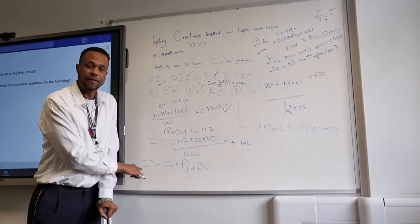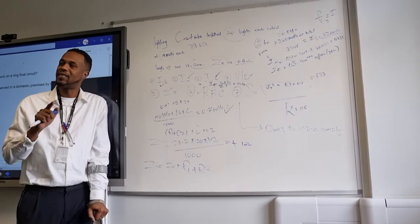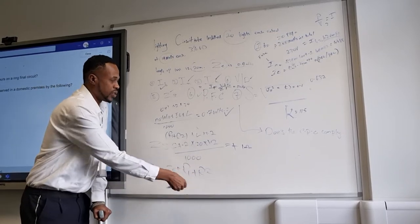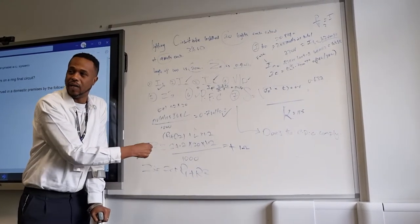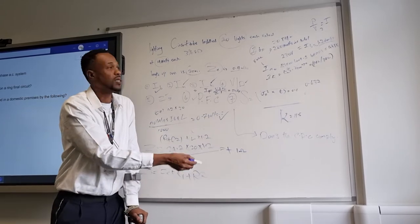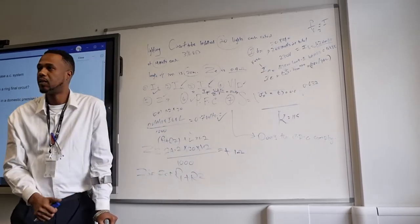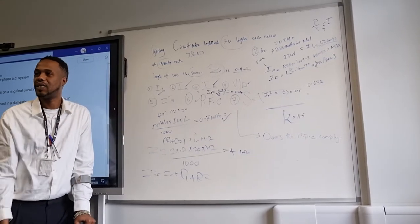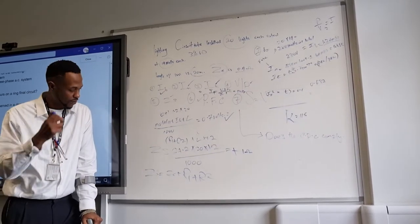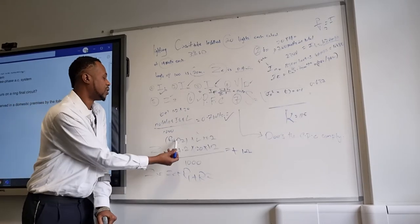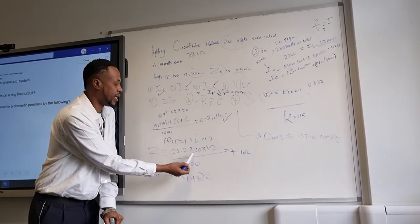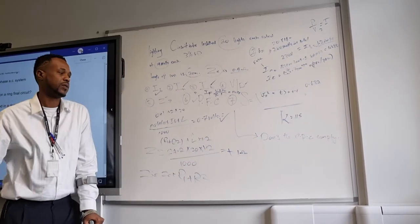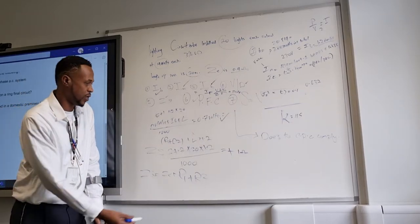The formula to find Zs is Zs equals Ze plus R1 plus R2. So the R1 plus R2, which is 24.2, times the length of run, which is 20, times 1.2, the multiplier, over 1,000. And that's how you get this.